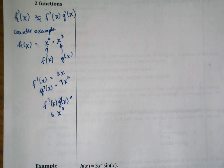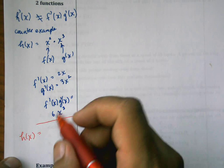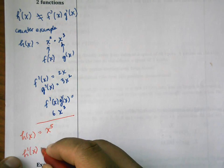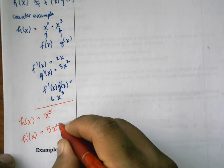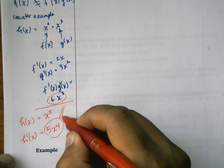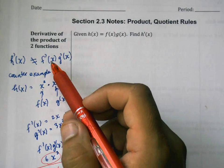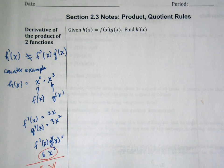So f prime times g prime would be 6x cubed. Now I know that this rule doesn't work simply because if you considered h again, another way we could write h is x to the fifth. If we took h prime with the power rule, this would be 5x to the fourth. So this number and this number are most certainly not equal.